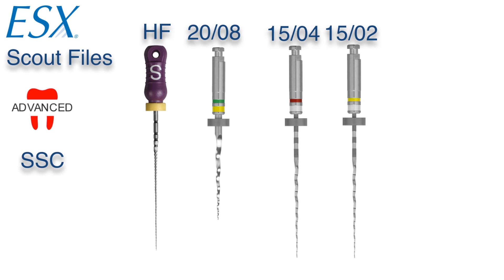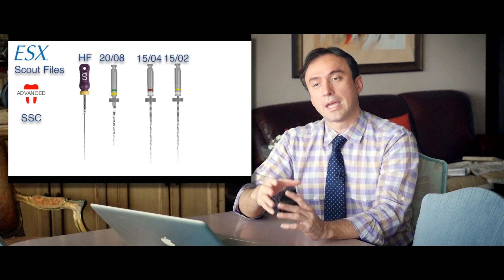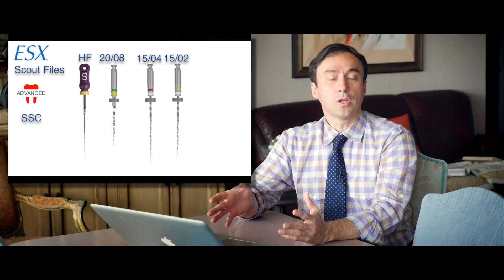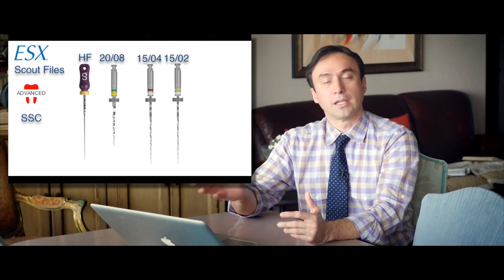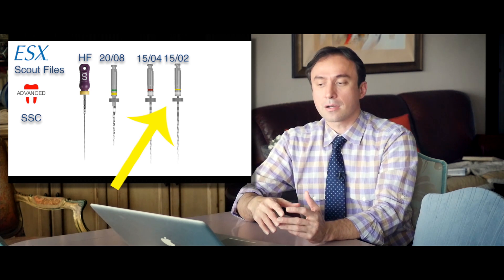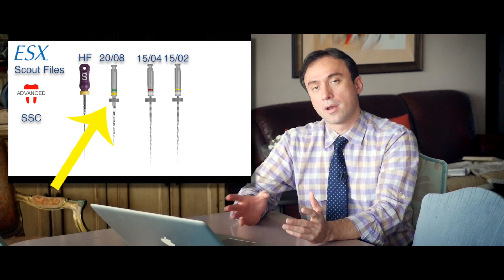Well, it's fairly simple. ESX has given you three additional files other than the basic protocol files that will help you get your 1502 shape prior to the use of the expediter. And these are the two scout files and the one orifice opener.